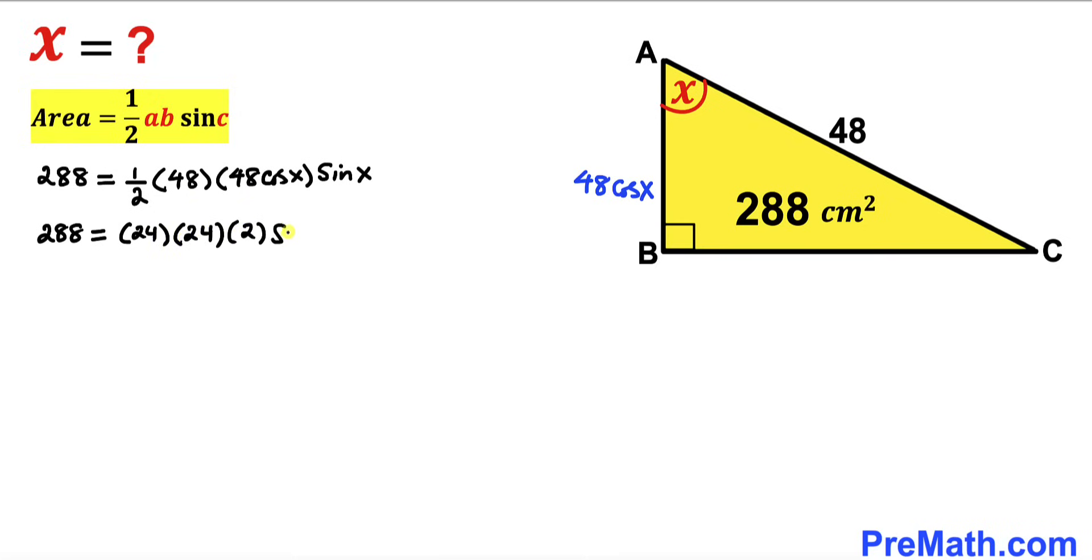I'll write down sine of X times cosine of X. Now let's multiply: 24 times 24 is 576. So therefore, 288 equals 576 times 2 sine X cosine X.